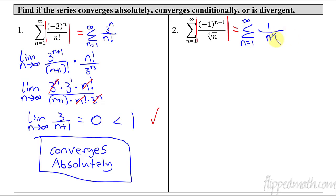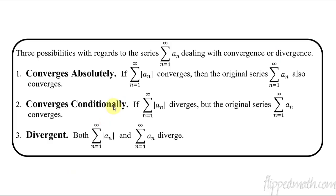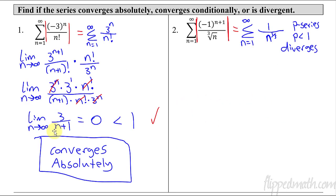This is a p-series, going back to earlier in unit 10. Here p equals one-third, which is less than one, so this thing is diverging. Remember, p had to be greater than one in order to converge. So the absolute value diverges. That doesn't mean the whole thing diverges — we're either on step two or three. Now we check whether the original series converges or diverges, and that'll tell us which case we're dealing with.